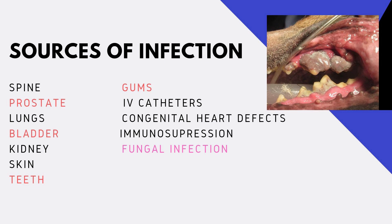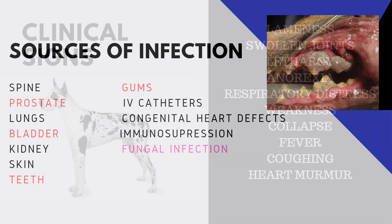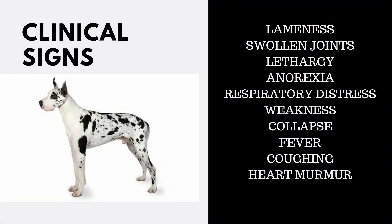Many different bacteria cause endocarditis, some more common than others. Occasionally, fungal organisms can affect the valves too. Bacterial endocarditis is more common in large breed dogs that are middle-aged or older.